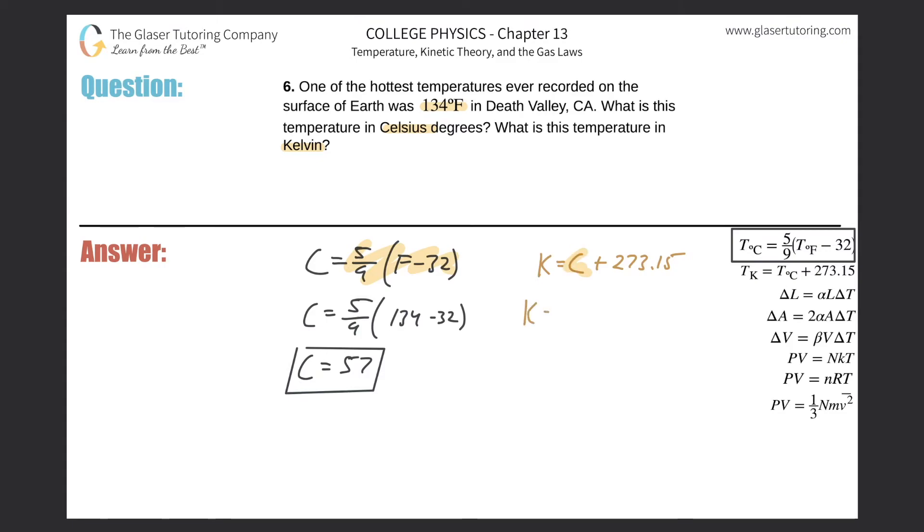This tells us that it's five ninths multiplied then by the Fahrenheit temperature minus 32, then added to this constant of 273.15. And here's the formula.